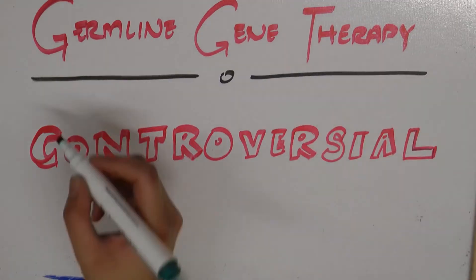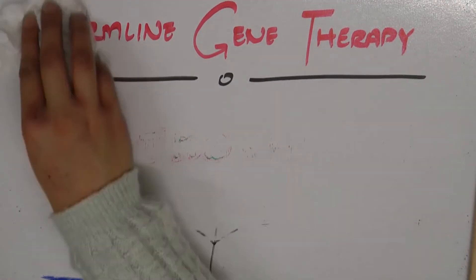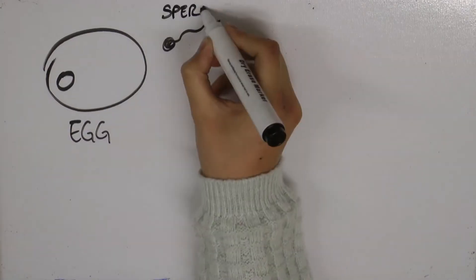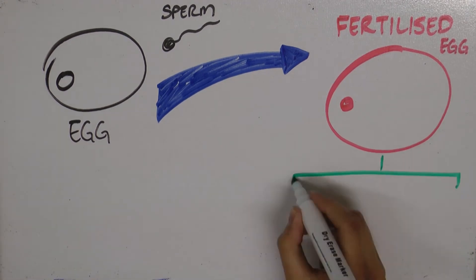Germline gene therapy is a much more controversial method. It involves the modification of germ cells which give rise to an organism expressing modification in targeted genes. This allows for a therapy which is heritable and can be passed to later generations.